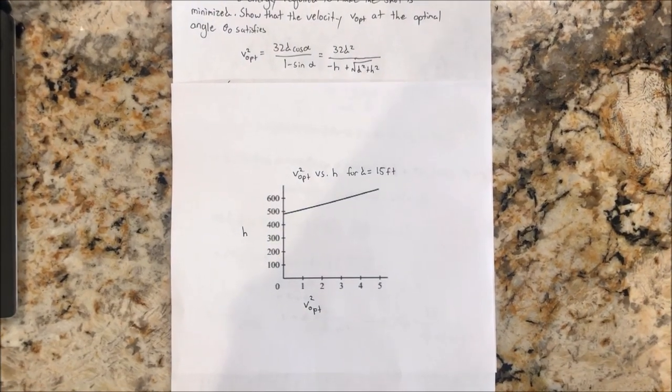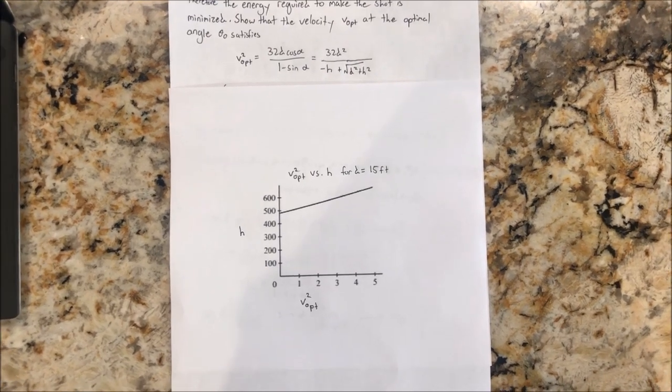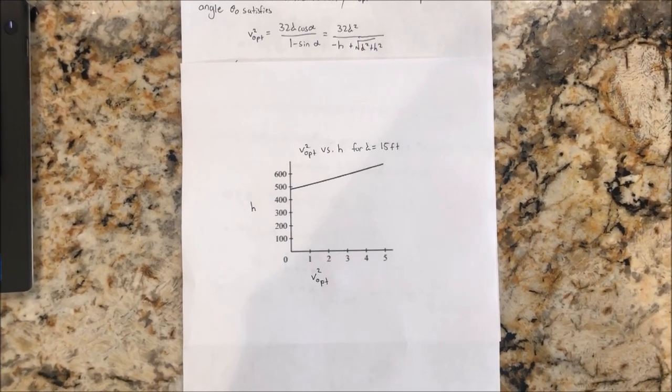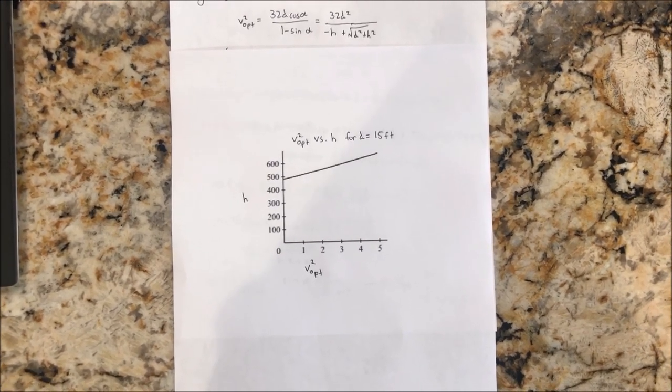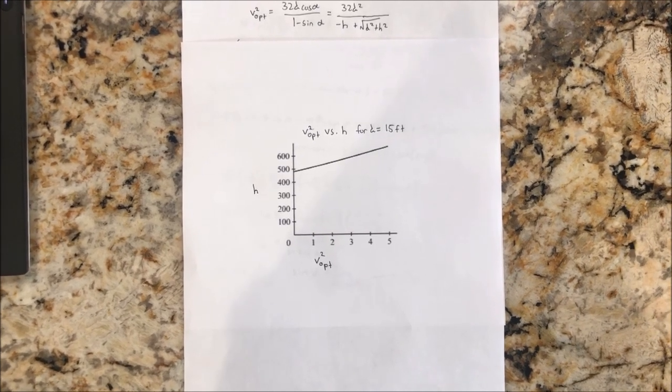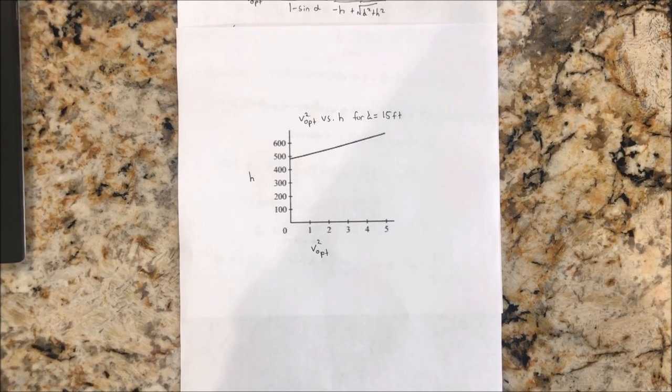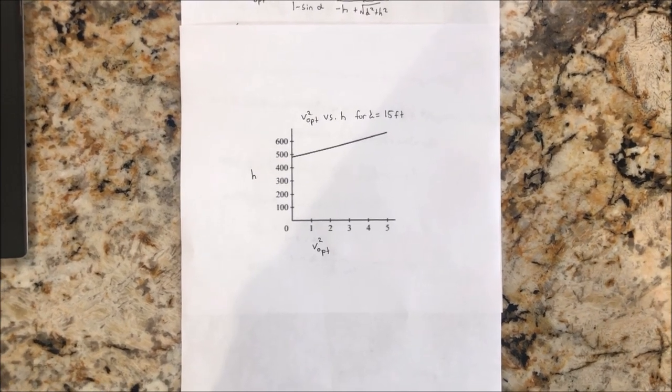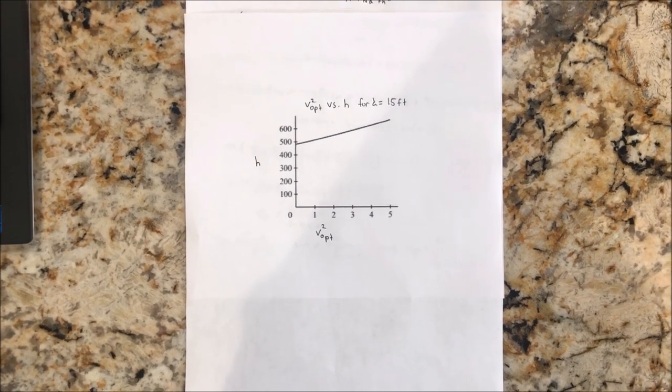So here, I graphed v squared optimal versus h for a set distance of 15 feet. So as you can see, v squared optimal increases with respect to basket height relative to the shooter. This shows that the minimum velocity required to launch the ball to the basket drops as shooter height increases. This shows one of the ways height is an advantage in free throws. A taller shooter need not shoot the ball as hard to reach the basket.